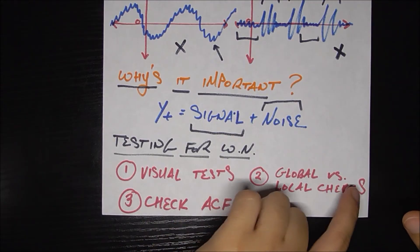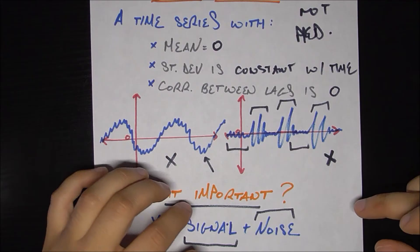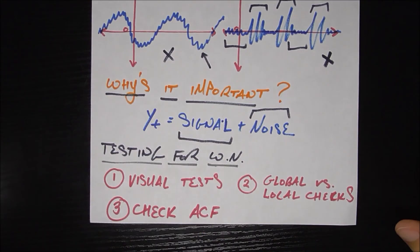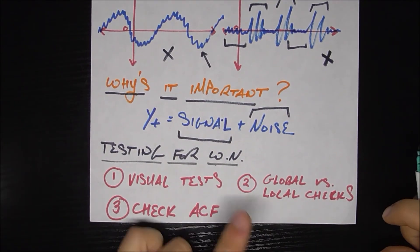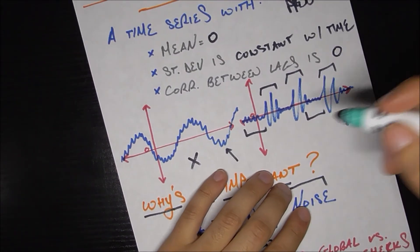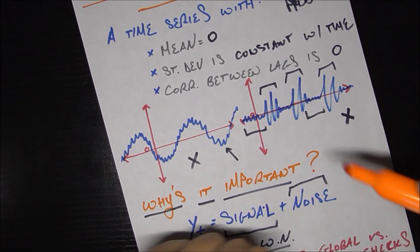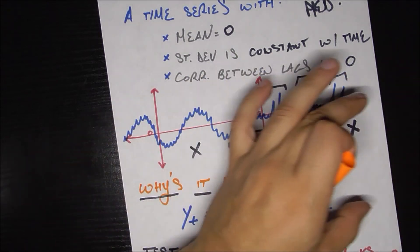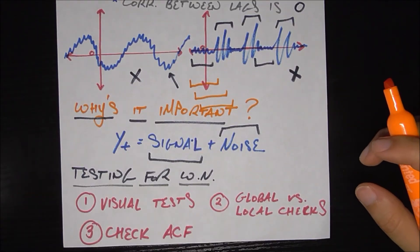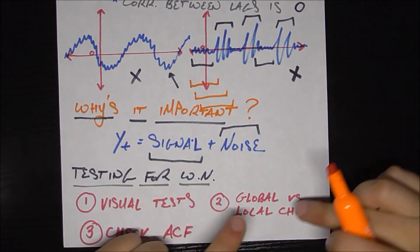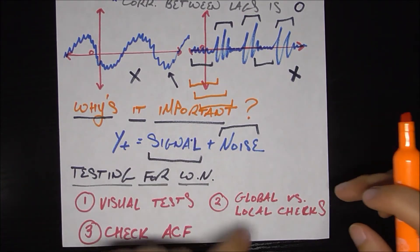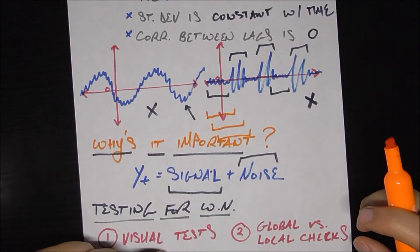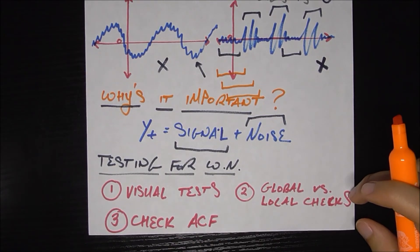The second one is we can run global versus local checks. What that means is, let's say you have a time series, you're trying to figure out if it is or is not white noise, you can calculate the mean and variance of the entire time series. And then you can also calculate, that would be global, and then you can also calculate the mean and variance of slices of that time series. So maybe you do a rolling window, let me switch colors here. Let's say you do a rolling window of this time series of seven day chunks. So you do this seven days, then you do this seven days, then you do this seven days, and you just roll that window. And for each window you calculate, again, the mean and the standard deviation. And those means and standard deviations, the local ones, should match up to each other and also to the global one, if this is truly white noise, because of course, the mean should be zero at all times, and the standard deviation should be constant at all times. So that's the second set of tests you can run.